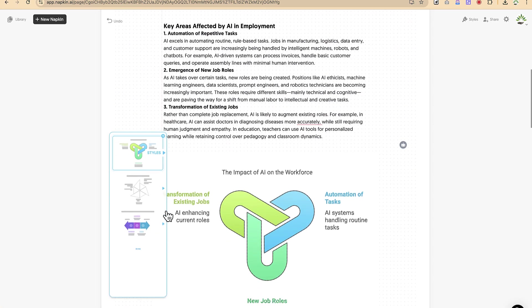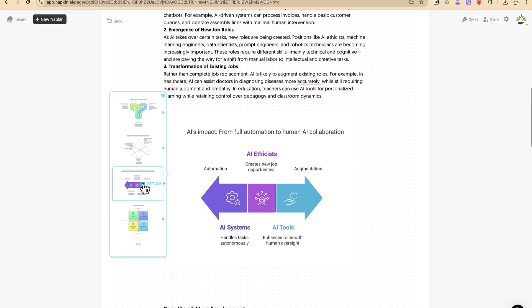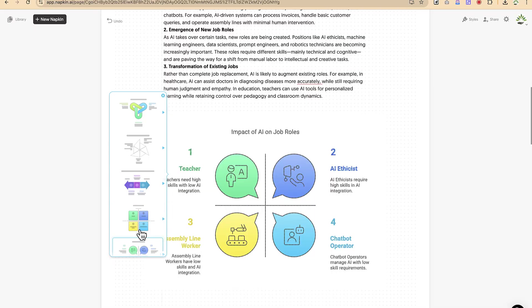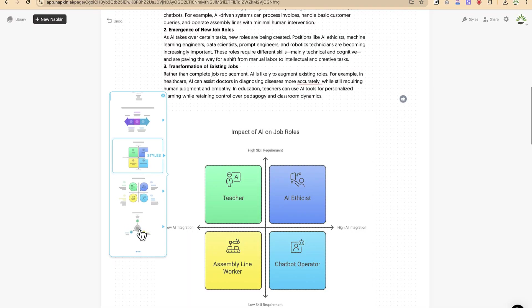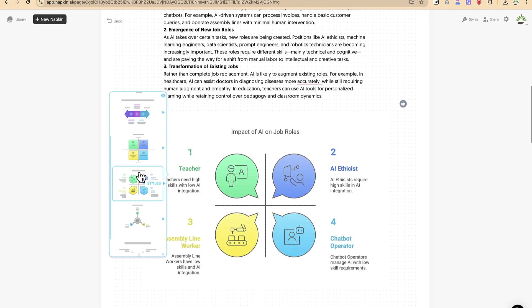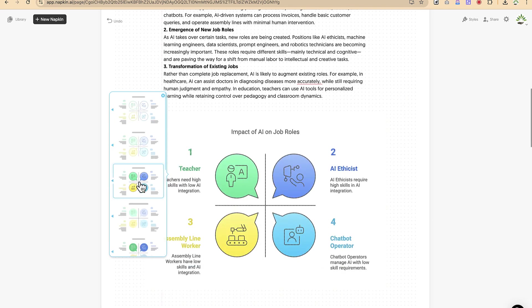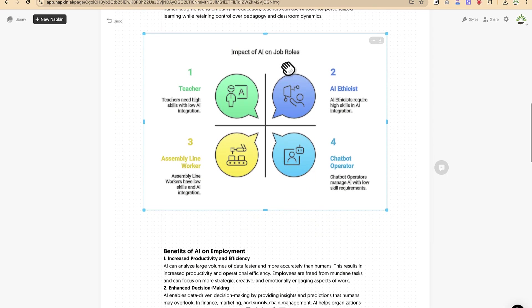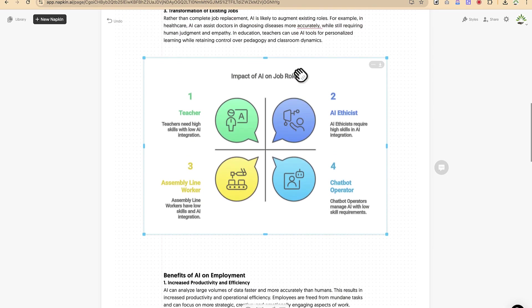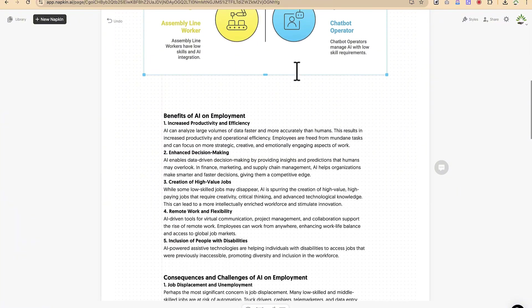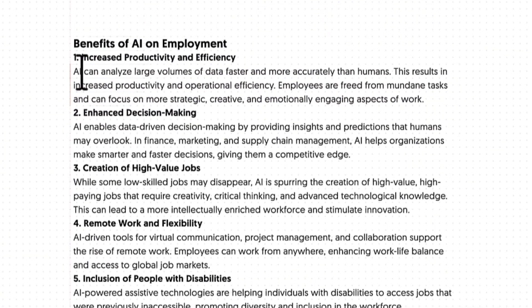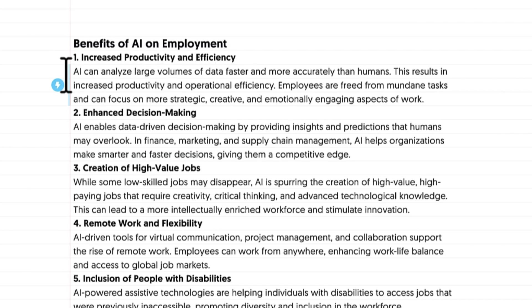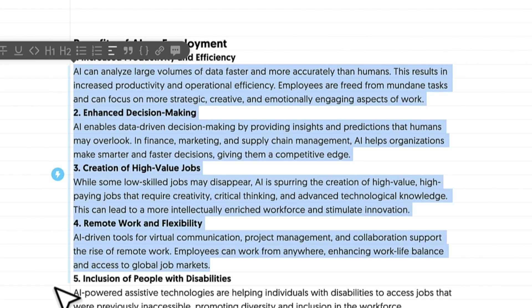So you can see we have this. Let's select something simple. You can just click to keep exploring the ones that they have. I kind of like this one. So we'll go with something like this, make it more colorful. And now we have our second slide: the impact of AI on job roles. So we can go to the next one, which is benefits of AI on employment.